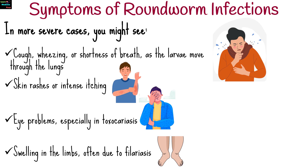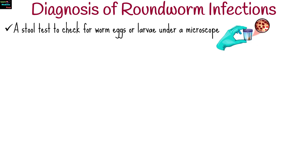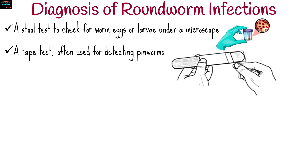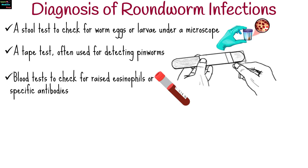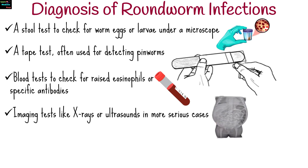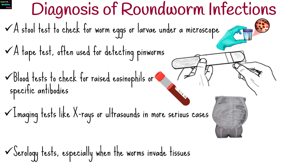Diagnosing a roundworm infection involves several steps: a stool test to check for worm eggs or larvae under a microscope; a tape test, often used for detecting pinworms; blood tests to check for raised eosinophils or specific antibodies; imaging tests like x-rays or ultrasounds in more serious cases; and serology tests, especially when the worms invade tissues.